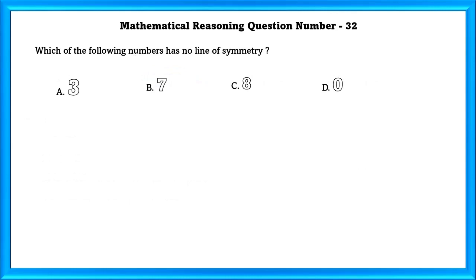Mathematical reasoning question number 32: Which of the following numbers has no line of symmetry? As we can see, option B — the number 7 — has no line of symmetry.